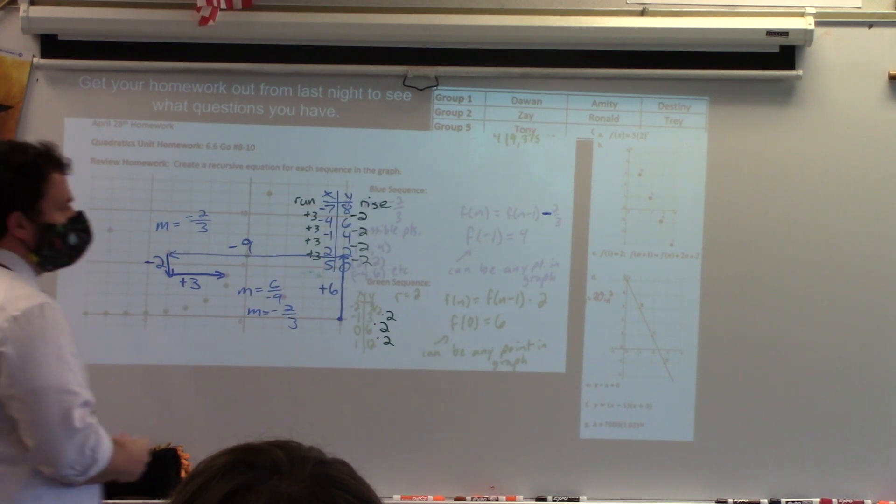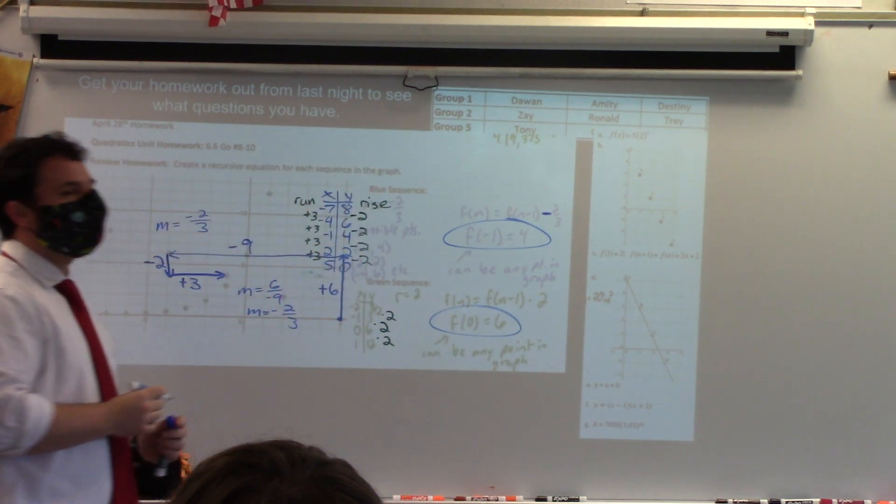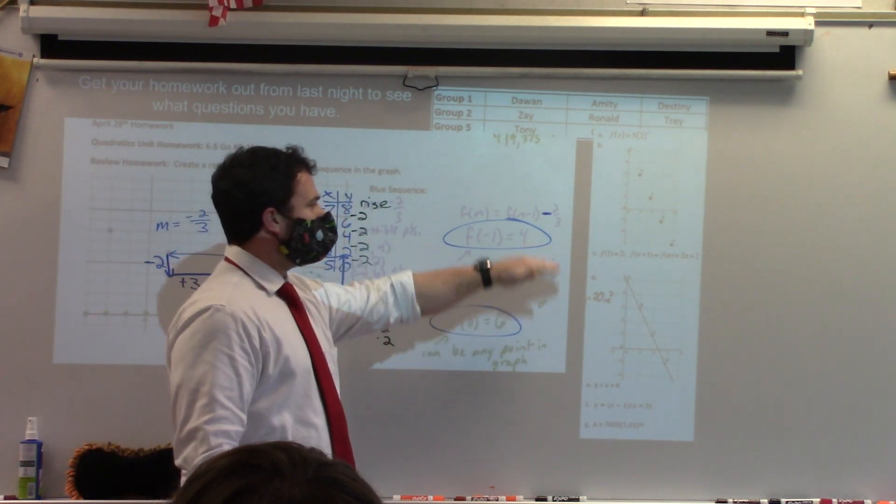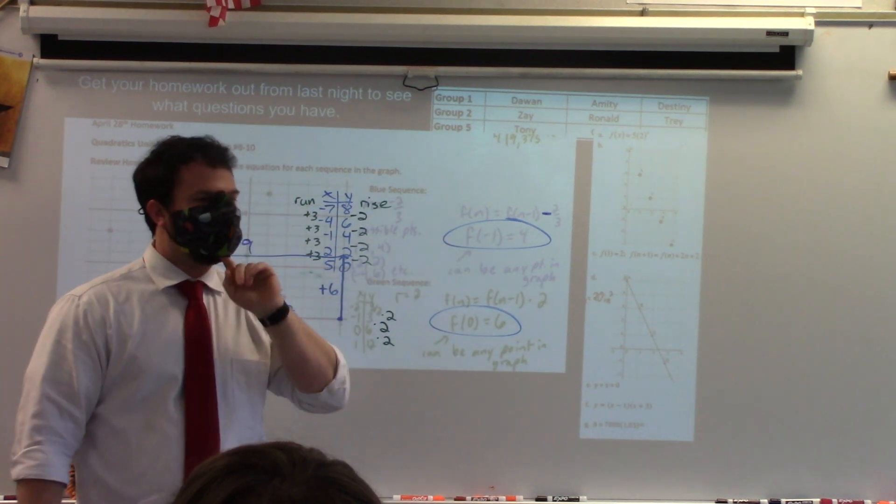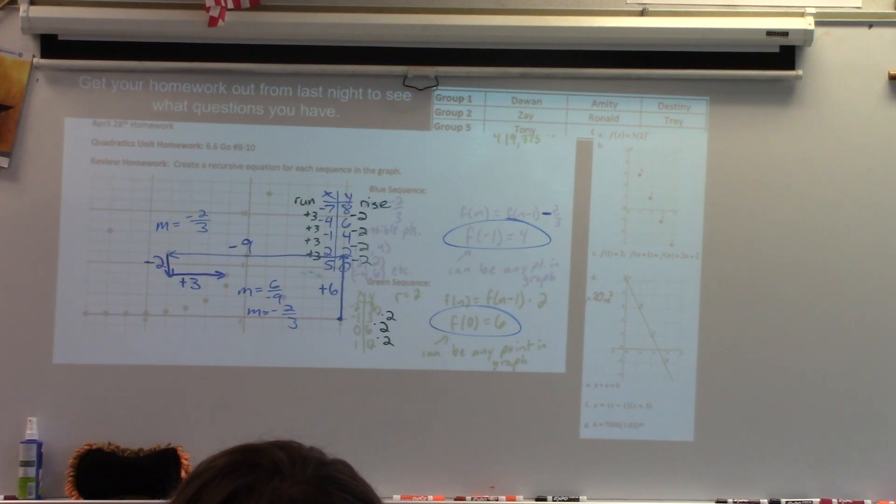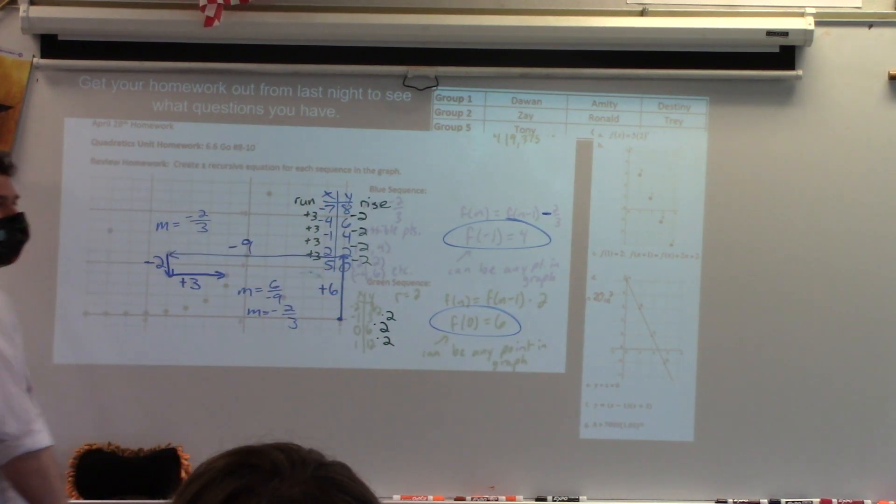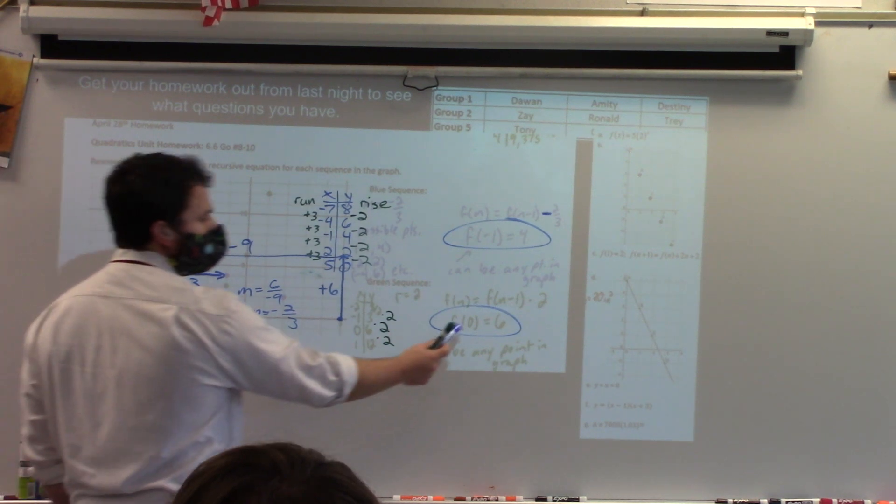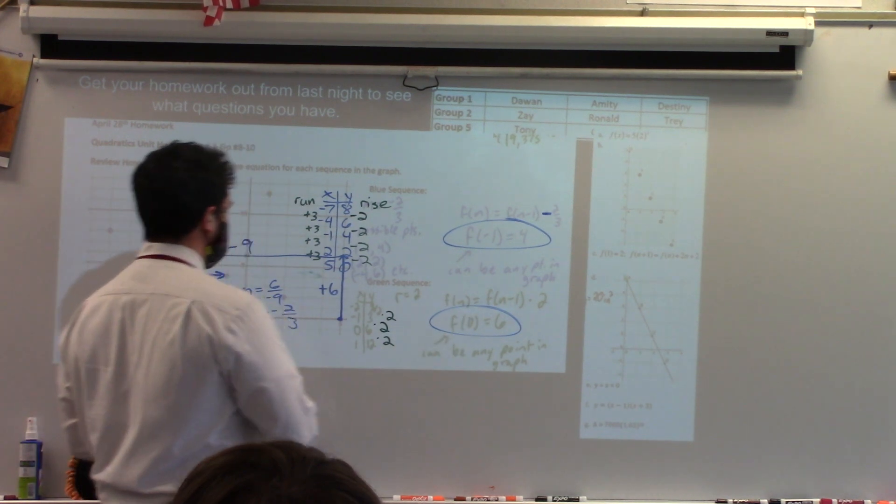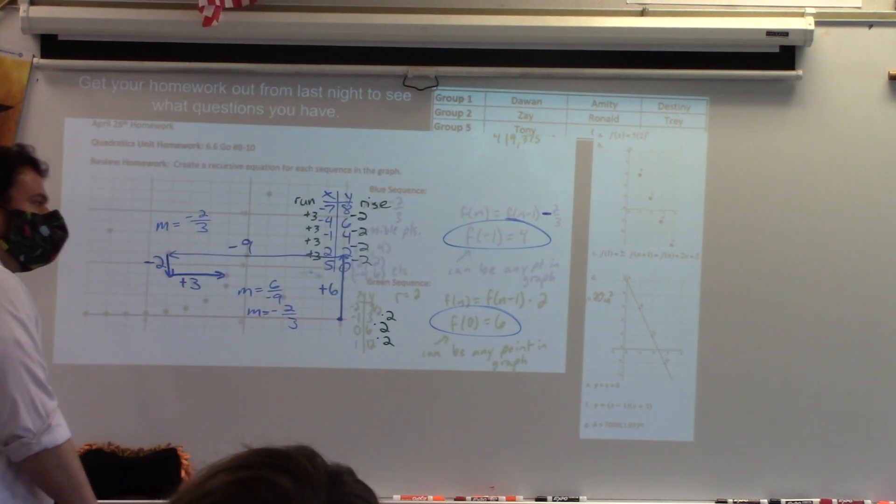Do not forget, because I am seeing a nasty habit from a lot of students where we forget to do a starting point. Anytime you have a recursive equation, you need the rate of change, but you also need to know where the function is starting. That's what we have going on there. But when we do that, we can do any point in the graph, right? It can be any point in the graph. It can be any point. Typically, I start with my y-intercept because it's easier, but I will point out you don't have the y-intercept for the blue one.